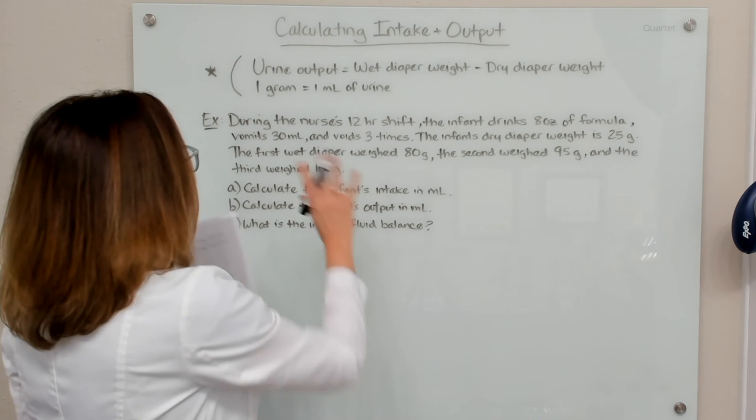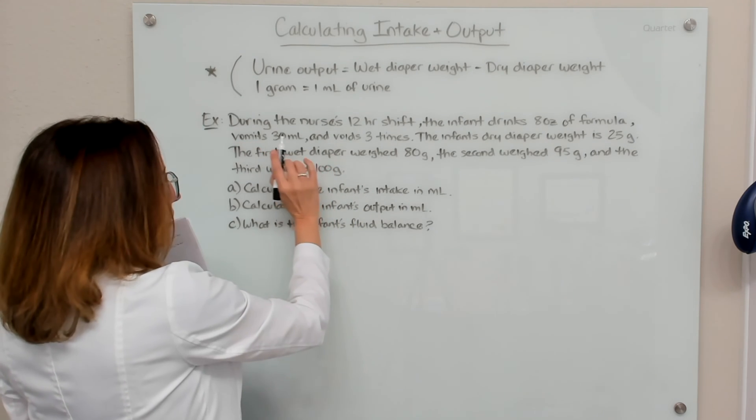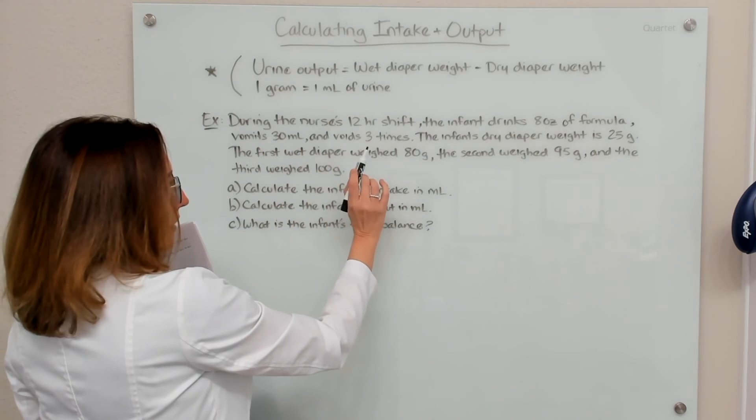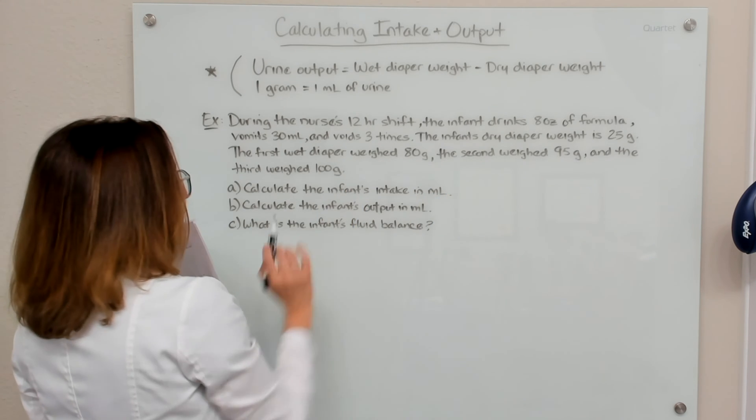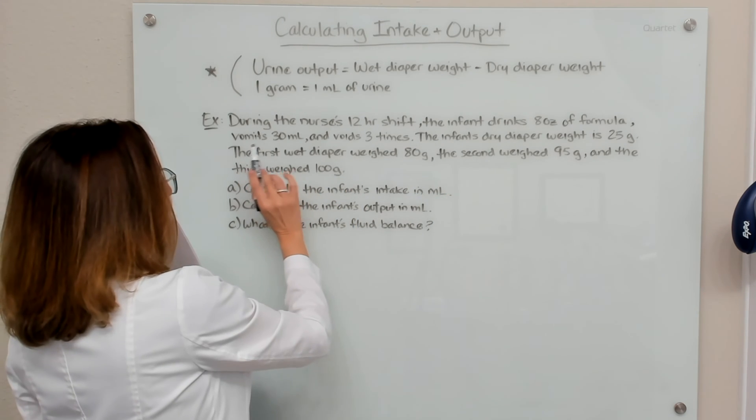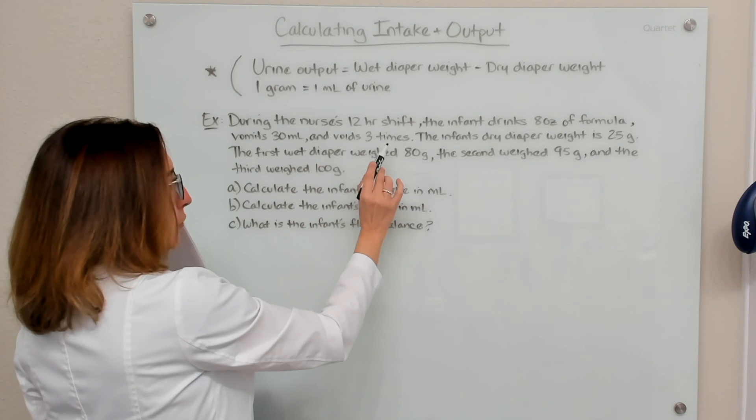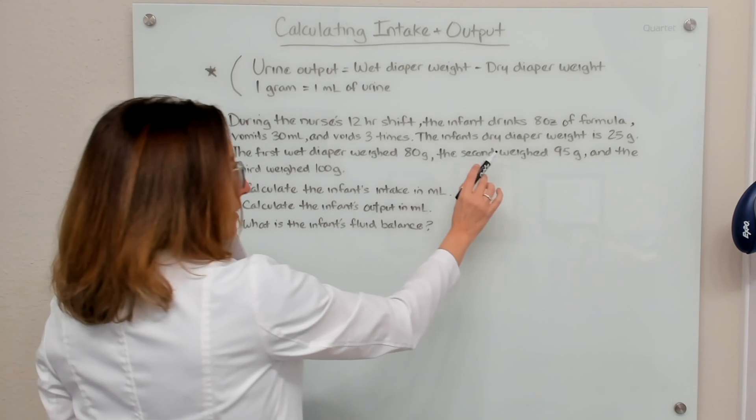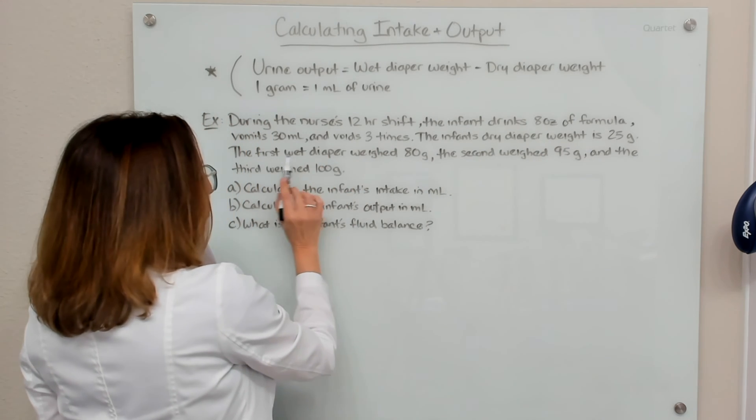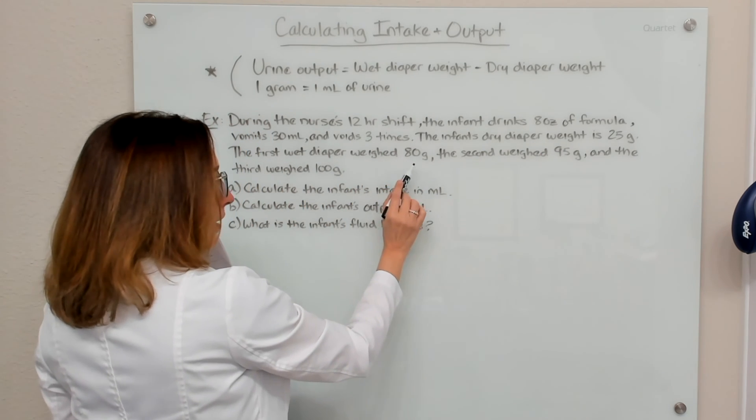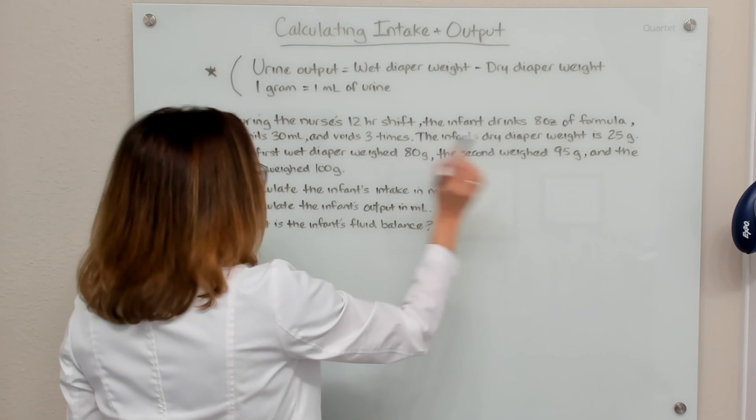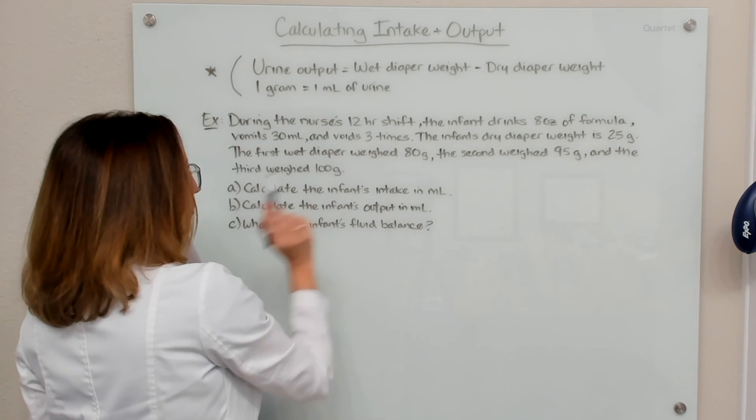So let's work through our example problem here. During the nurse's 12-hour shift, the infant drinks eight ounces of formula, vomits 30 ml, and voids three times. The infant's dry diaper weight is 25 grams. Their first wet diaper weighed 80 grams, the second weighed 95 grams, and the third weighed 100 grams.